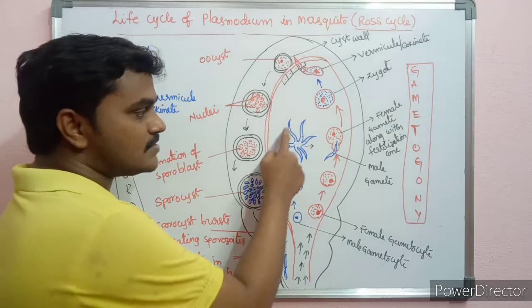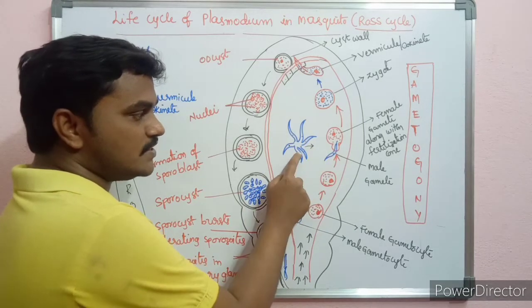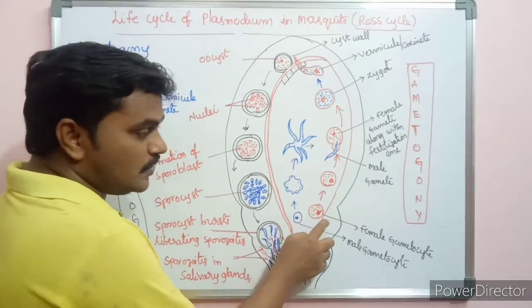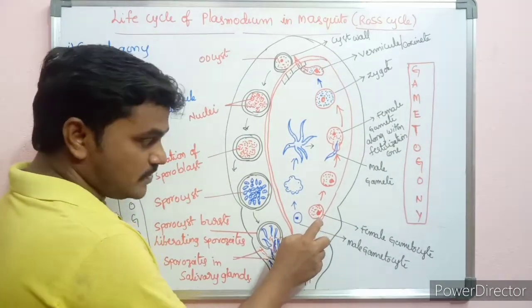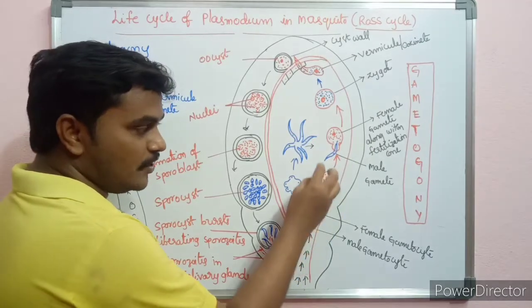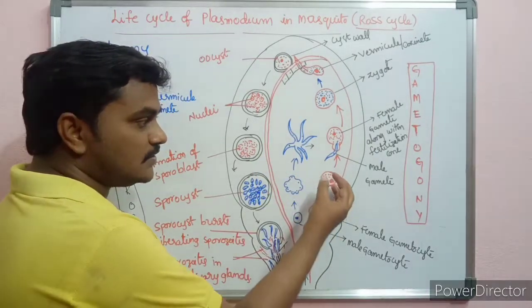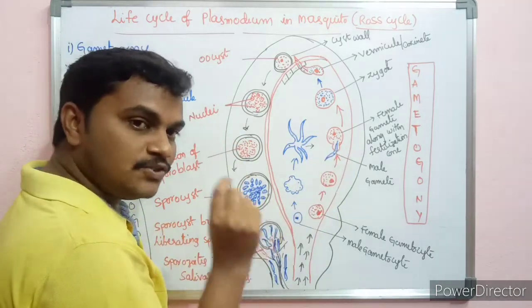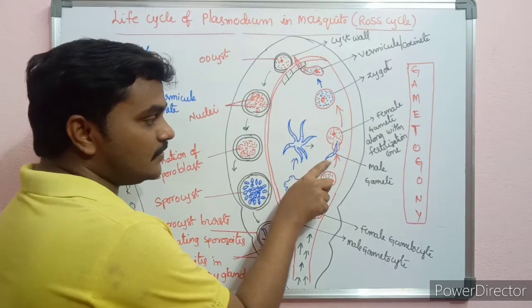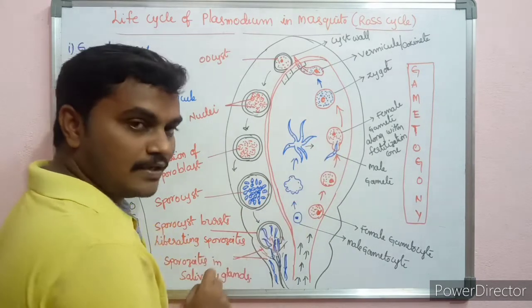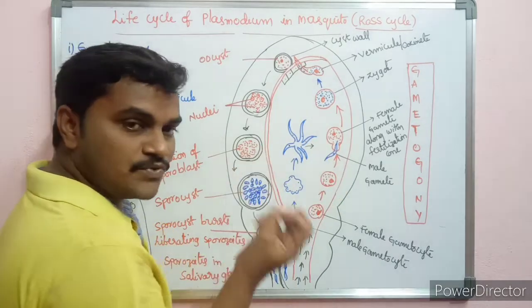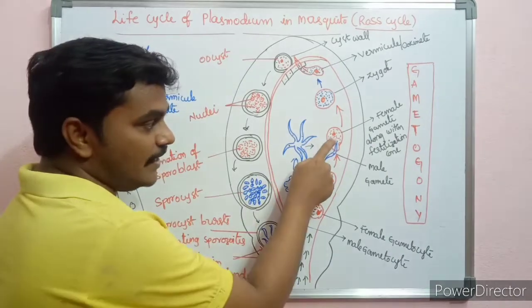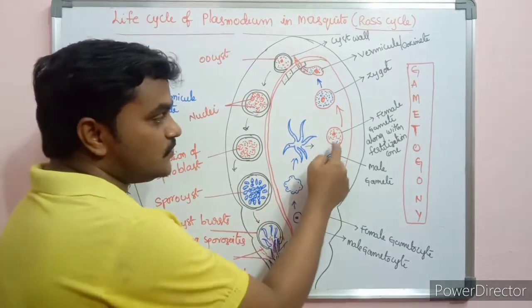In exflagellation, eight daughter nuclei form flagellate structures and one detaches — that is called exflagellation. For the female gametocyte, there is one large cell also called the macrogametocyte. The macrogametocyte develops and matures, and during maturation it forms a fertilization cone containing cytoplasm and nuclei. The exflagellated male microgamete then mixes with the macrogamete — this fusion of male and female gametes is called fertilization.